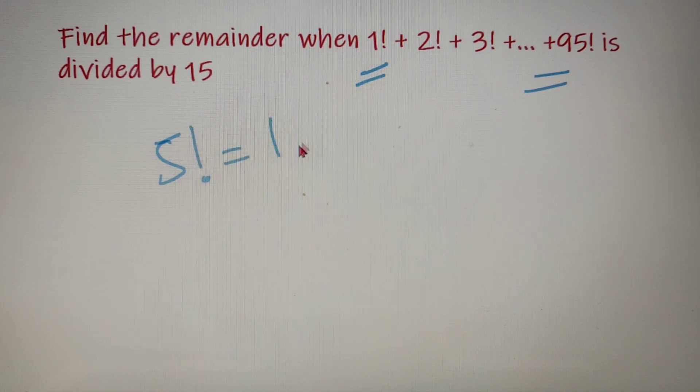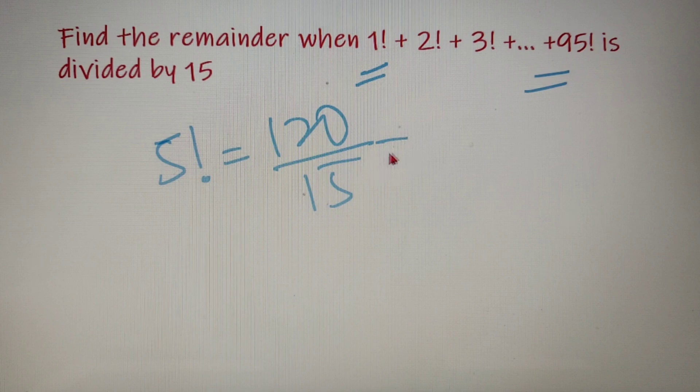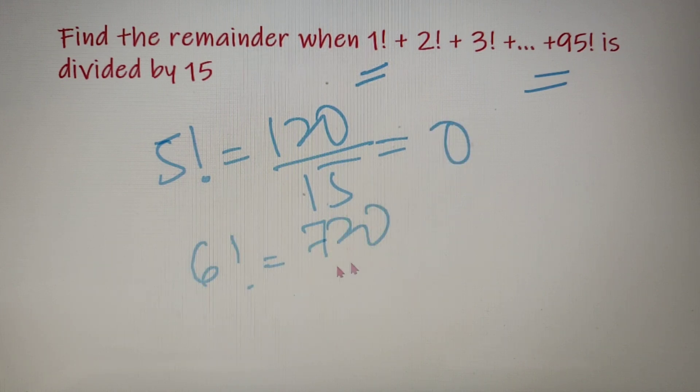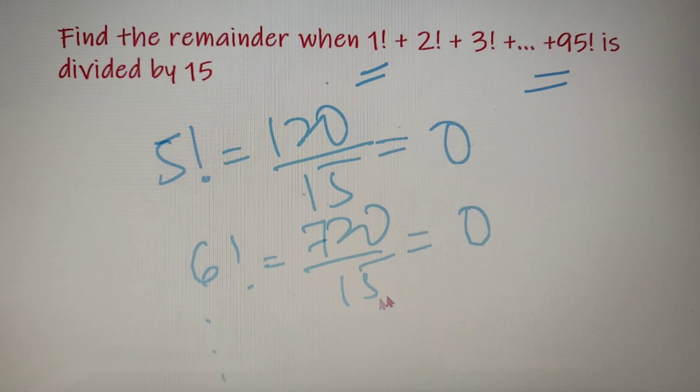So for example, 5 factorial is equal to 120 which on dividing by 15 gives the remainder as 0. 6 factorial is equal to 720 which on dividing by 15 gives the remainder as 0, and so on for all the numbers after 5.